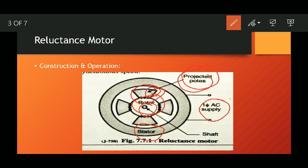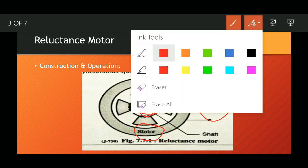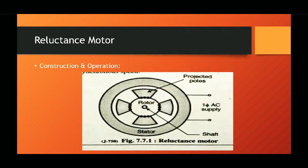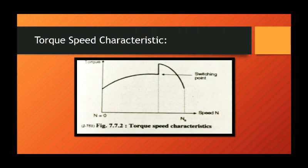Now we will see why this motor is called a reluctance motor. Here is the torque speed characteristic. The torque due to which the rotor gets pulled into synchronism is called reluctance torque.